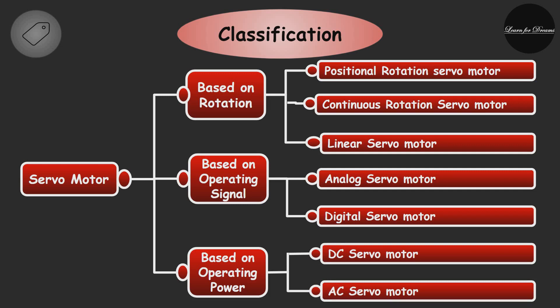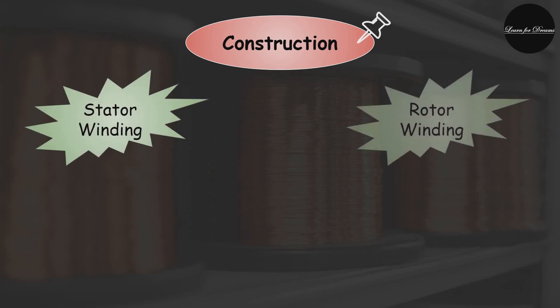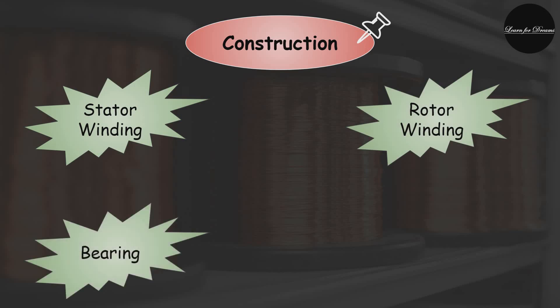Now let's see the construction of a servo motor. Servo motor has five basic parts, namely stator winding, rotor winding, bearing, shaft, and encoder.